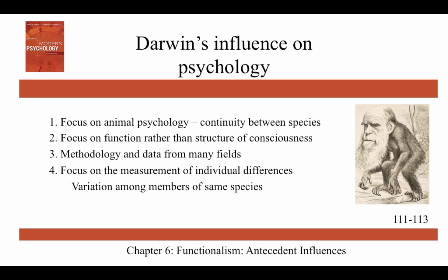Darwin's influence on psychology has four key points. First, a focus on animal psychology and continuity between species — psychologists came to realize that studying animal behavior was vital to understanding human behavior. Second, a focus on function rather than the structure of consciousness — how consciousness functions in adapting people to their environment. Third, methodology and data from many fields: Darwin's data came from geology, archaeology, demography, observation, and pigeon breeding. Fourth, a focus on measuring individual differences and variation among members of the same species — if each generation were identical, evolution could not occur, so psychologists proposed techniques for measuring those differences.